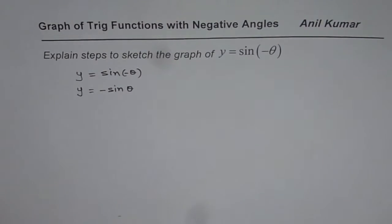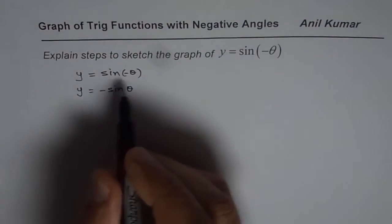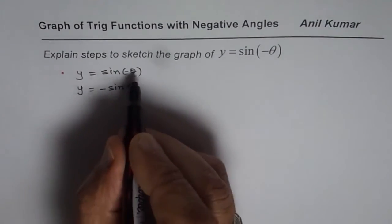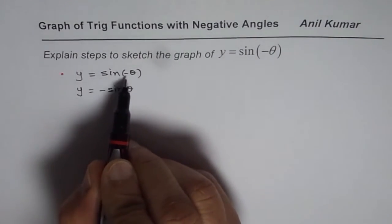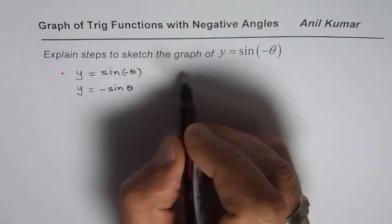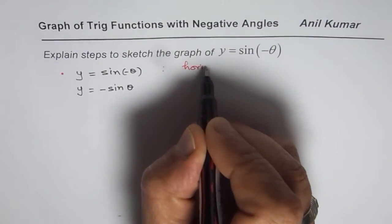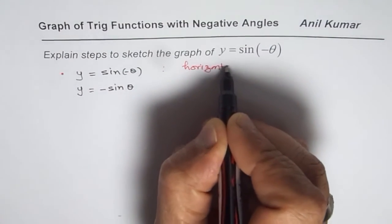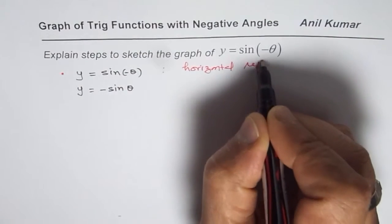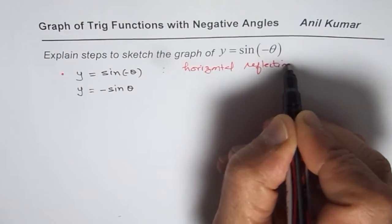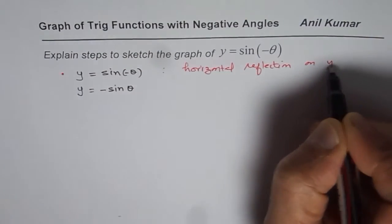Now, if I am looking at this equation as y equals minus sin theta, then we have horizontal reflection on y-axis. So that is the way we can see this equation.